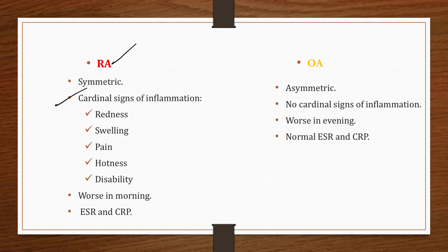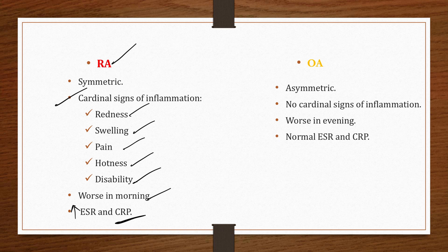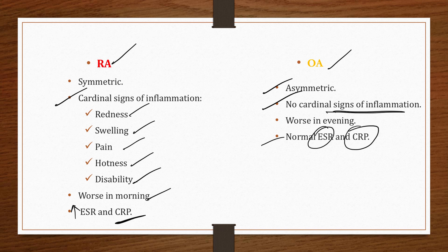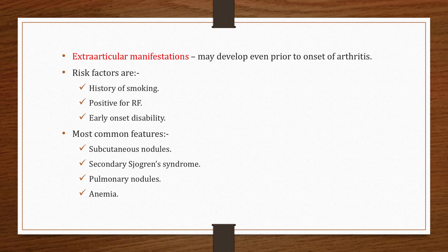In RA, patients present with cardinal signs of inflammation — redness, swelling, pain, hotness, and loss of function — which is worse in the morning and improves as the day passes with activity. Elevated ESR and CRP are present. In contrast, osteoarthritis is asymmetric and non-inflammatory, with stiffness and pain worse in the evening, and ESR/CRP are not elevated.